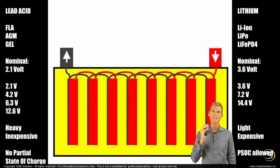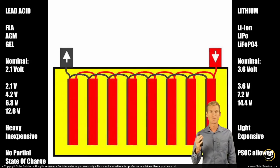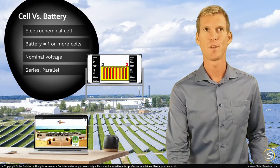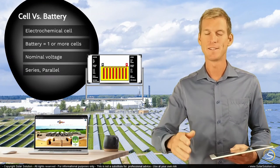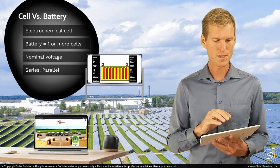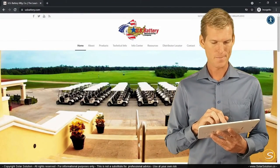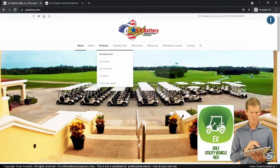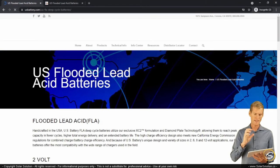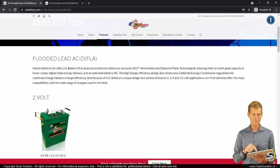Now that you understand what an electrochemical cell is, how it functions, the different types of batteries, and their voltage characteristics, let's go online and look at a real example of batteries. I want to show you something in real life that you can expect when you start shopping. I'm going to the website of a battery manufacturer — US Battery, with whom I'm not affiliated — and navigating to their product section where I'll select flooded lead acid chemistry.